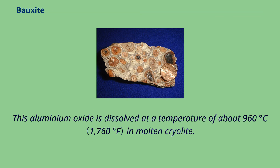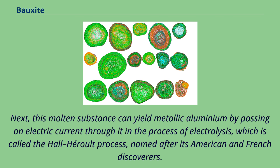This aluminium oxide is dissolved at a temperature of about 960 degrees Celsius in molten cryolite. This molten substance can yield metallic aluminium by passing an electric current through it in the process of electrolysis, which is called the Hall-Héroult process, named after its American and French discoverers.